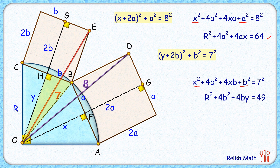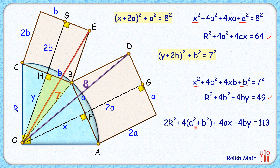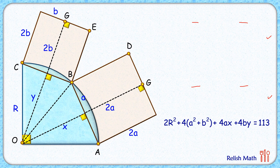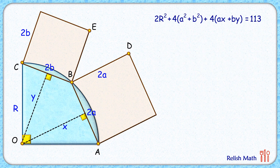We now have two equations. Adding them gives a new combined equation. To solve it we need to eliminate a and b. The plan is: first find the value of 4a² + 4b² separately, then find ax + by separately, substitute both values into the combined equation, and solve for r.